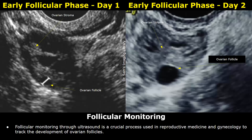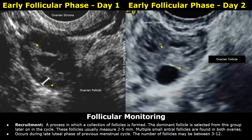What we have here are days one and two of the menstrual cycle, but before this phase we will talk about the process that takes place during the end of the previous cycle. The luteal phase is the last phase of the menstrual cycle. Towards the end of the 28-day cycle, a process known as recruitment takes place. During this process, a small collection of follicles is formed, measuring between 2 and 5 millimeters. Multiple small antral follicles are found in both ovaries.